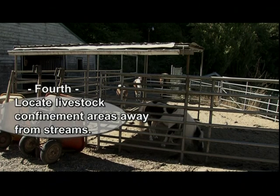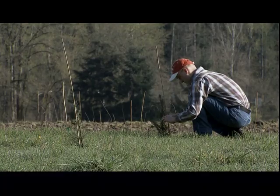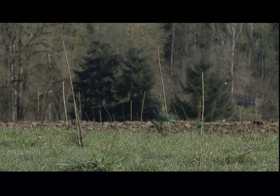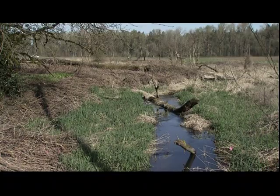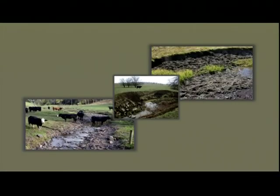Fourth, locate livestock confinement areas away from streams. Planting native plants around these areas will help absorb and filter nutrients and bacteria from manure before it reaches nearby streams, wetlands or groundwater. Limit your livestock access to streams, as livestock break down stream banks and can deposit manure directly into streams and wetlands.